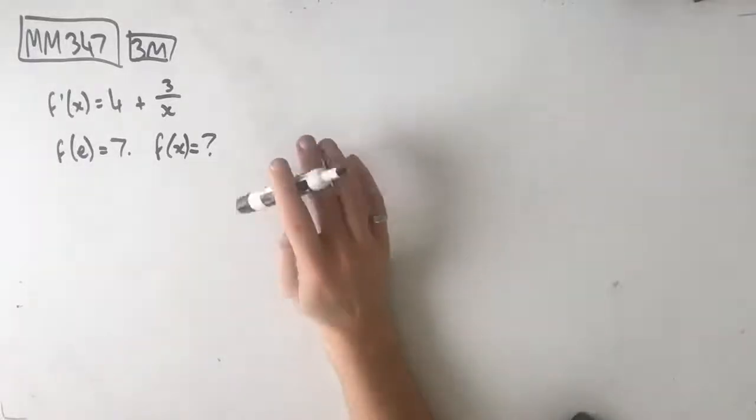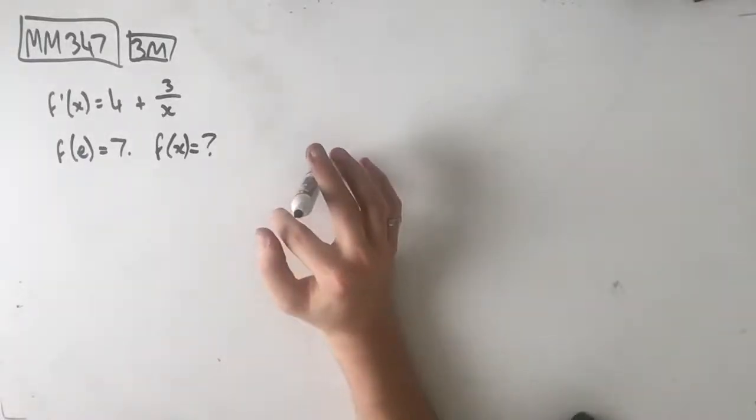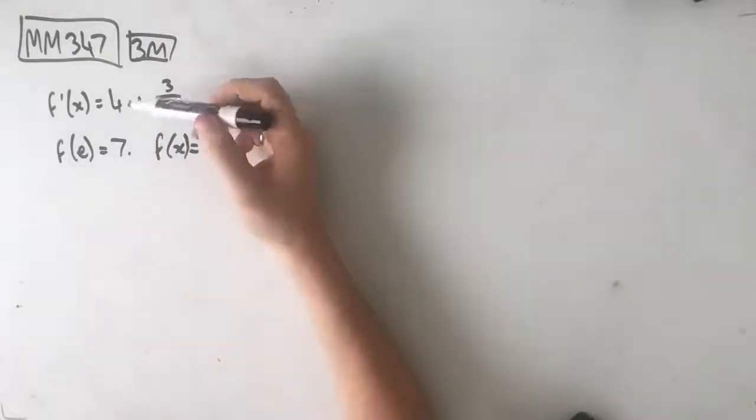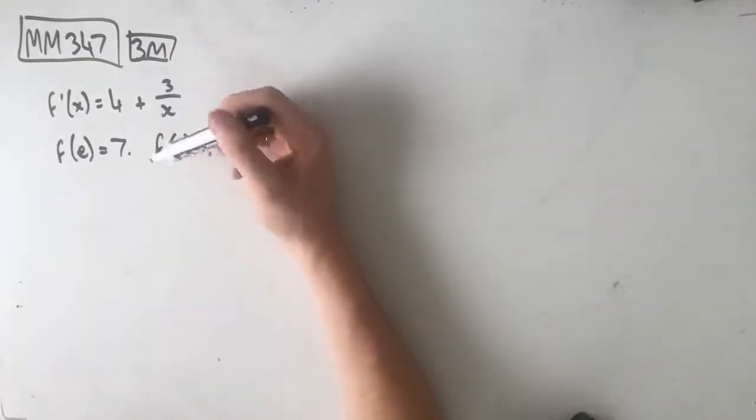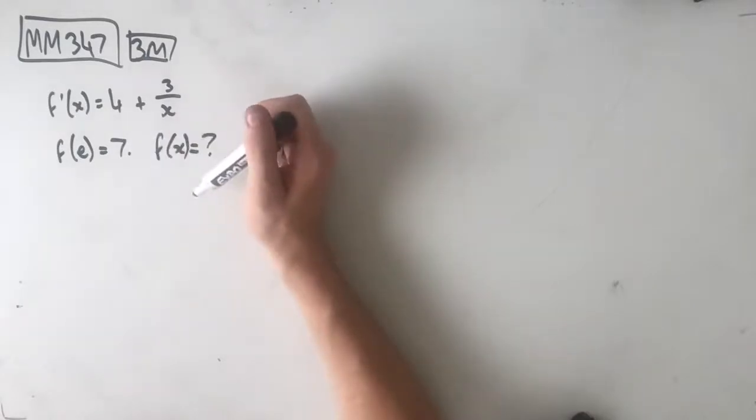Hey guys, welcome to question MM347 of the Maths and Methods Fortify study guide. So we've got this function that says f dash of x equals 4 plus 3 on x, and given that f of a equals 7, find f of x.